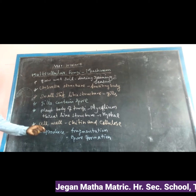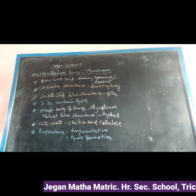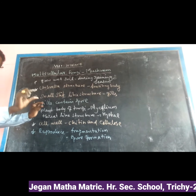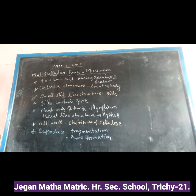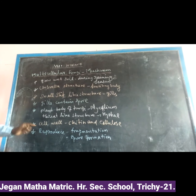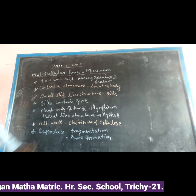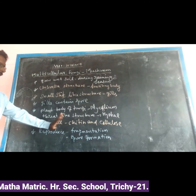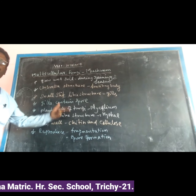Fungi reproduce by means of fragmentation and spore formation. Fragmentation means the plant body is cut into small pieces, and each piece develops into a new organism. Each fragment is developed into an entire plant. These are the two methods used for reproduction.